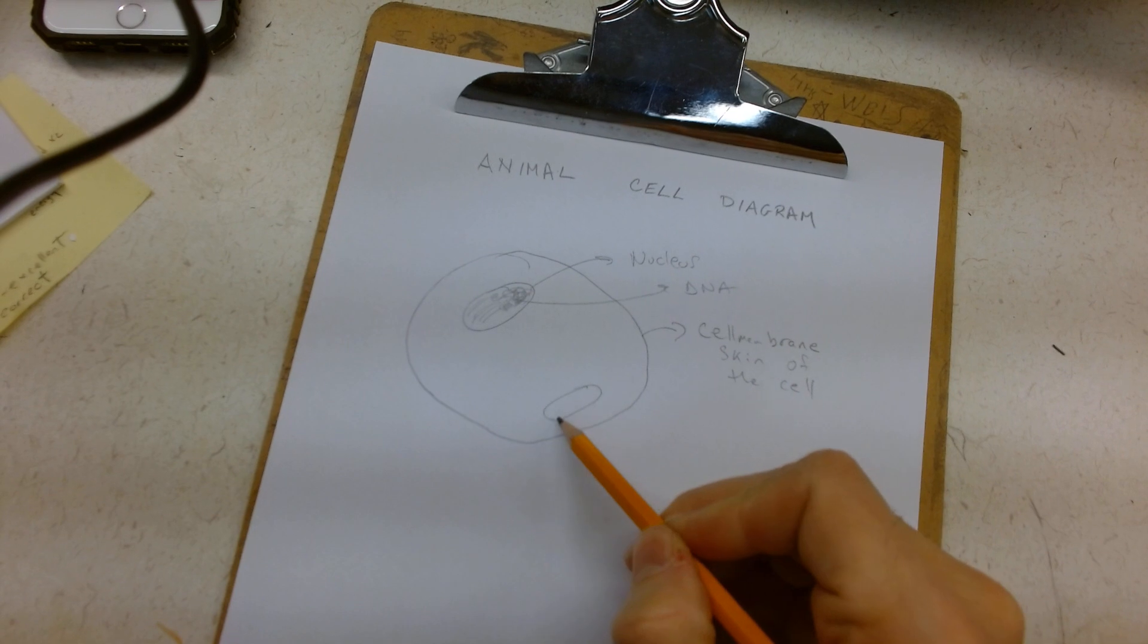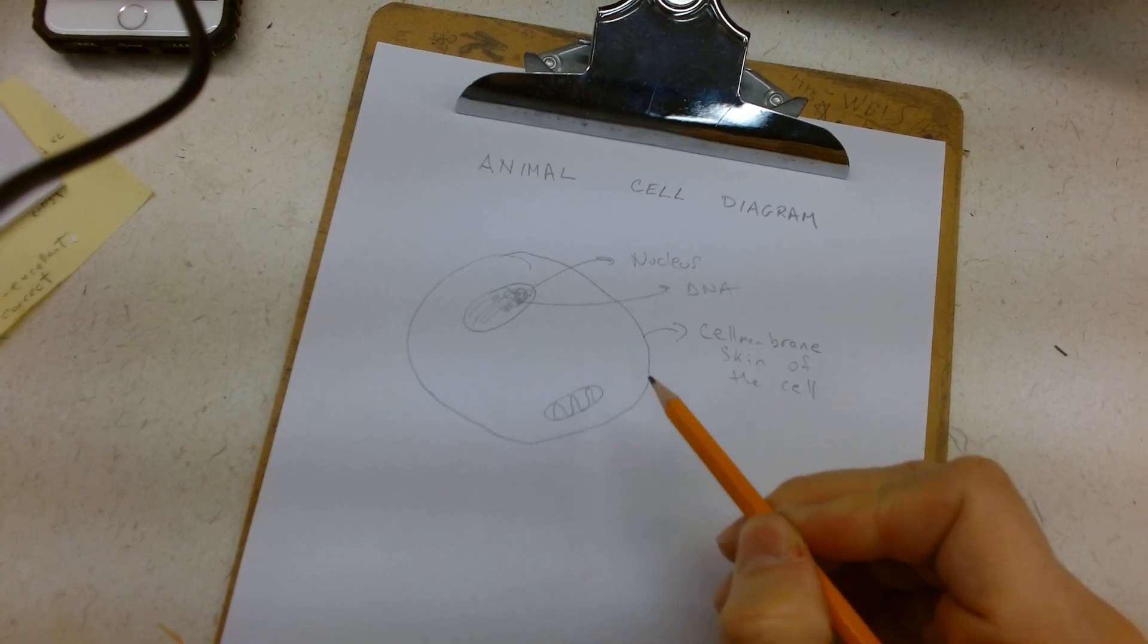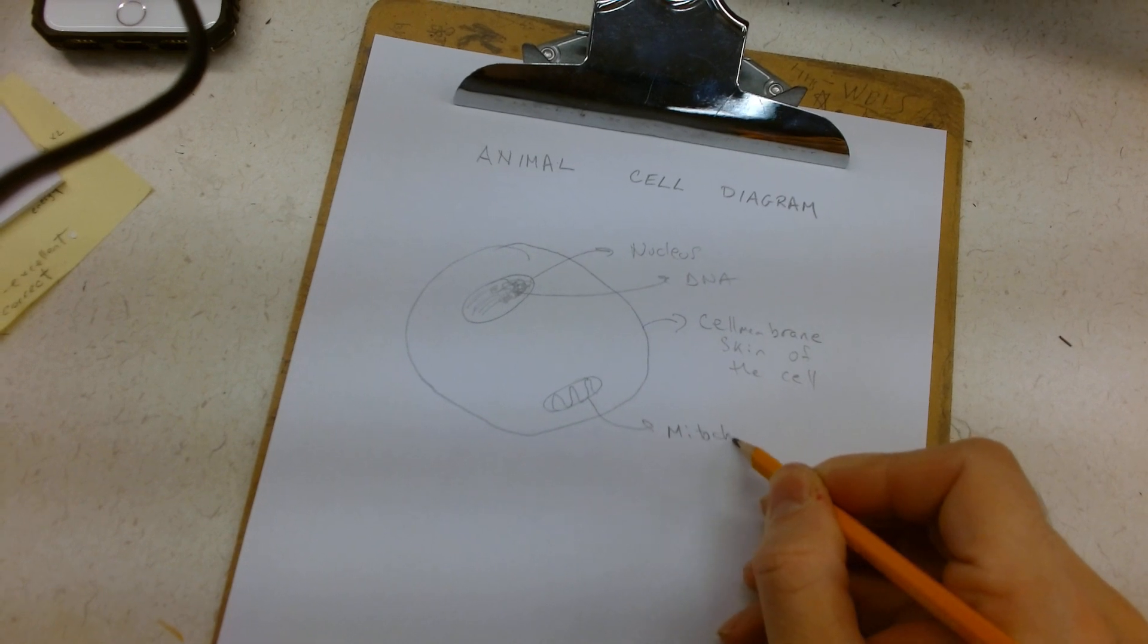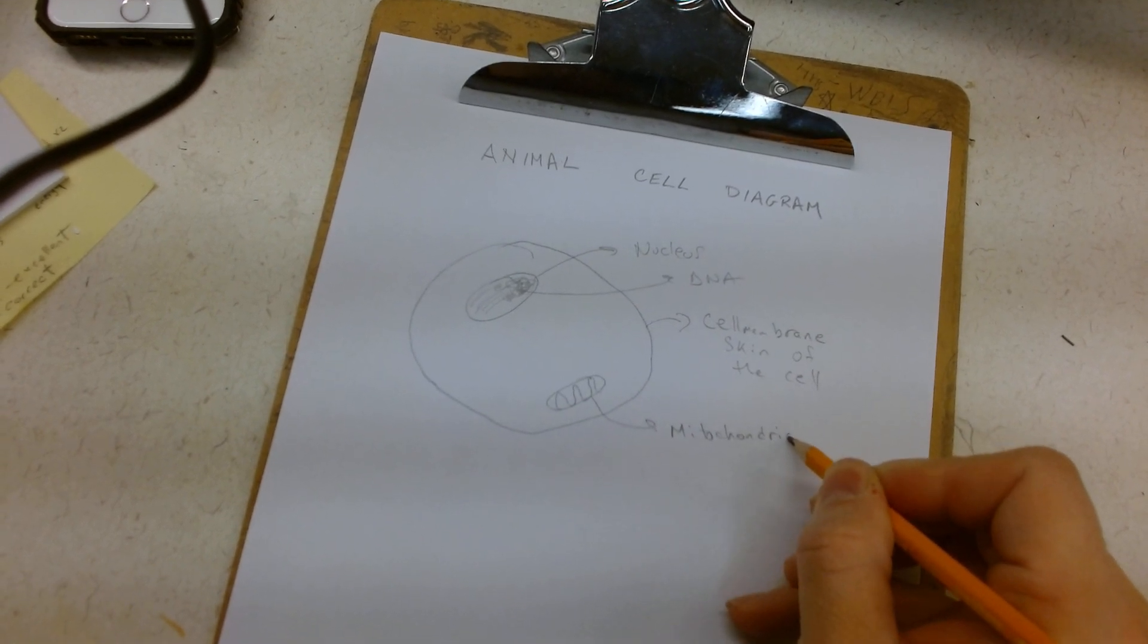And we have what you all so lovingly say, the powerhouse of the cell, the mitochondria. This is where sugar gets fully metabolized in the cell.